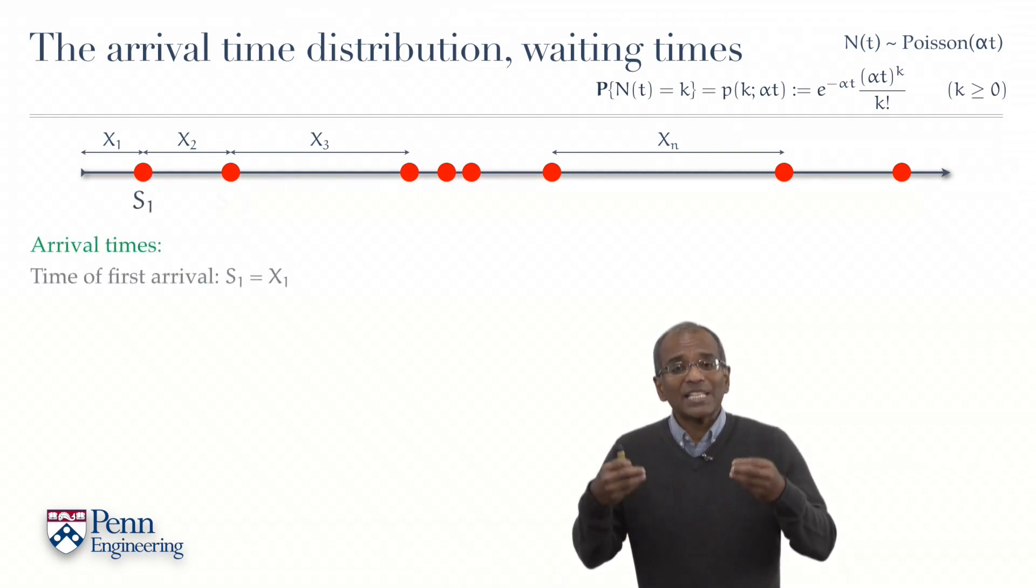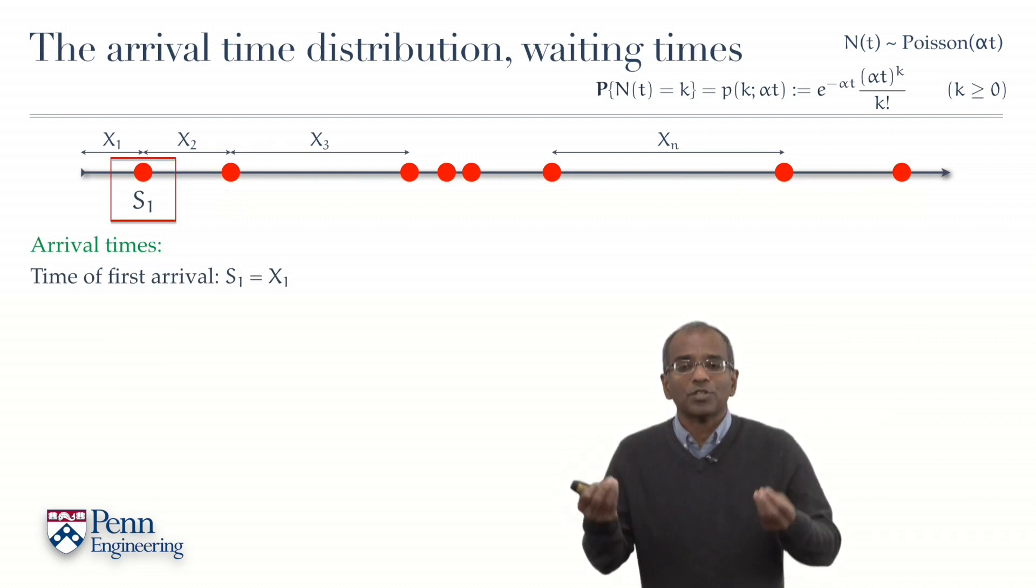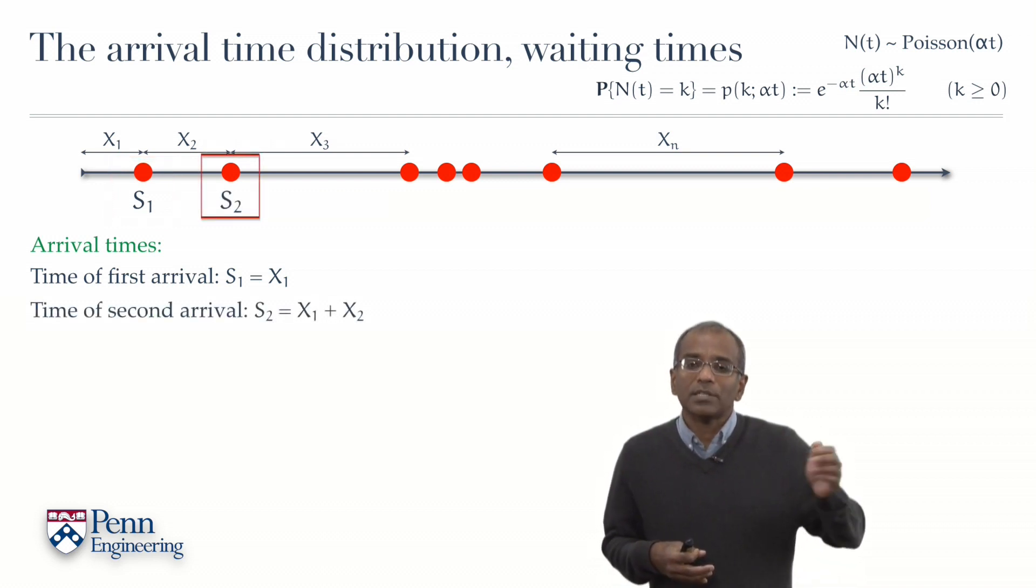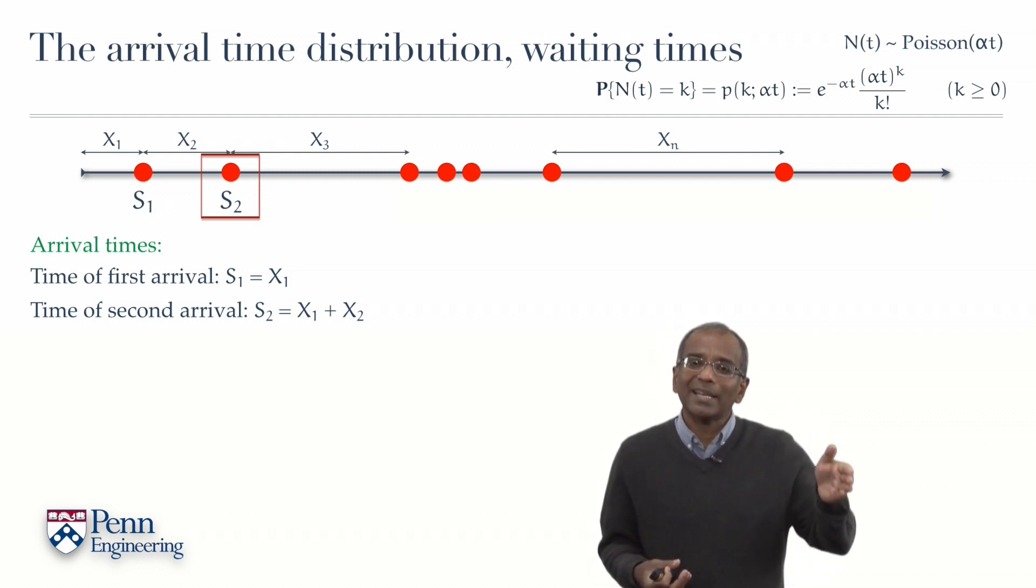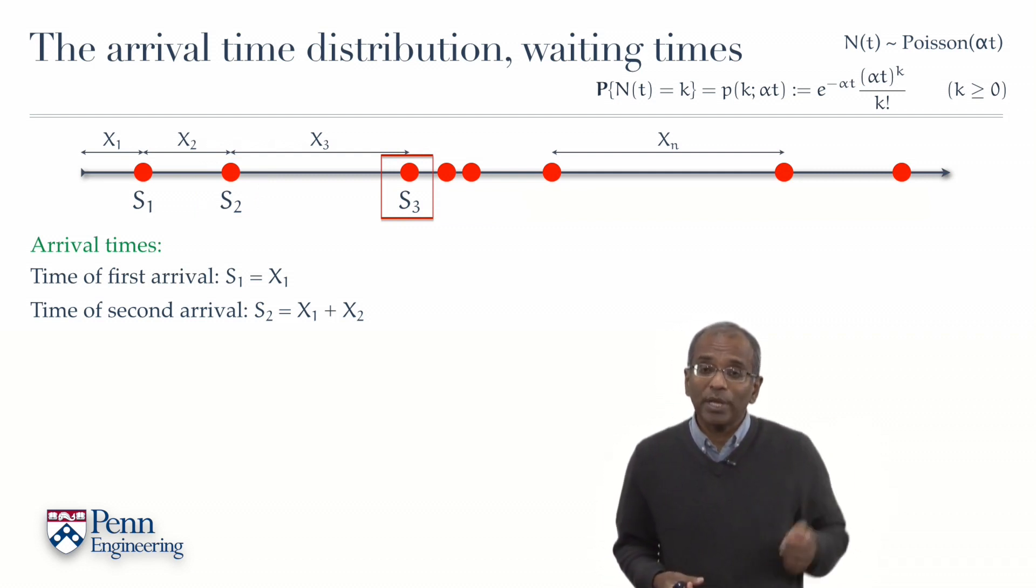Therefore, let S1 be the time of the first arrival, naturally S1 is X1. Let S2 be the time of the second arrival, naturally S2 is the sum of X1 and X2. S3 is the time of the third arrival, it's X1 plus X2 plus X3.